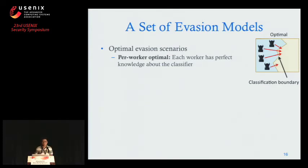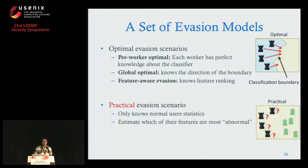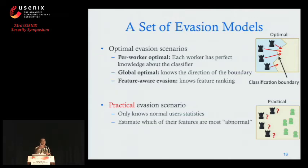A weaker model is global optimal evasion, where adversaries know the direction of the detection boundary and uniformly move toward it. In feature-aware evasion, adversaries know the relative ranking of feature importance, so they modify more important features first. In the practical evasion scenario, adversaries know nothing about the classifier. A simple but effective approach is to estimate normal user statistics — crawl some baseline user accounts, analyze them, compare yourself to normal user statistics, figure out which features make you look suspicious, and modify those first.